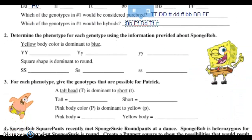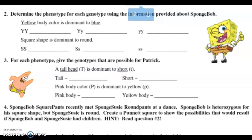Number two says determine the phenotype for each genotype using the information provided about SpongeBob. Remember, phenotype is the physical characteristics brought on by the genotype, which refers to the genes and alleles for those genes. Genotype would be the letters we talk about — big letter, little letter, big letter big letter. That's the genotype because it's talking about the gene makeup. Phenotype is the physical appearance that results from the genotype.